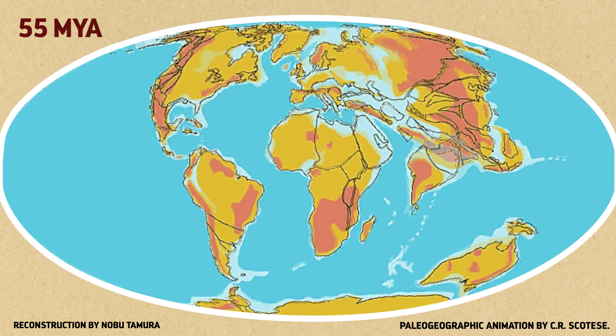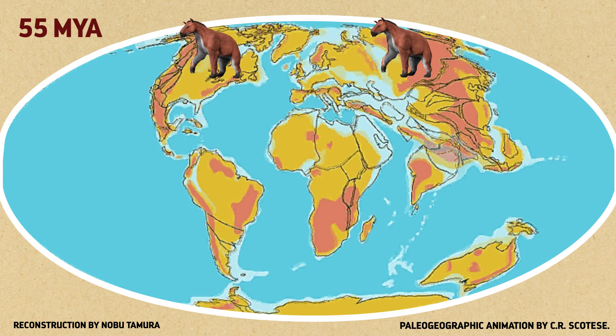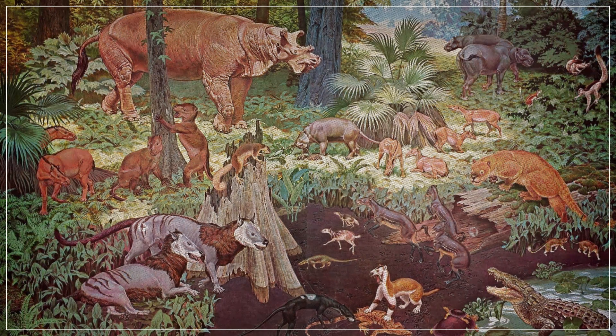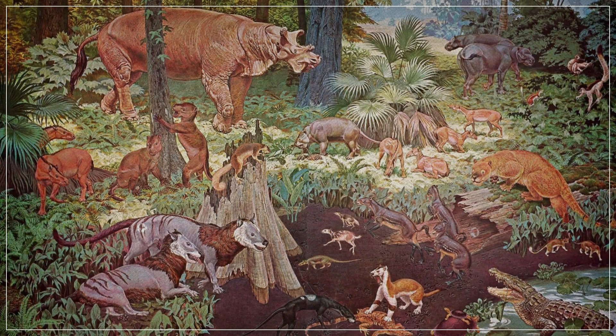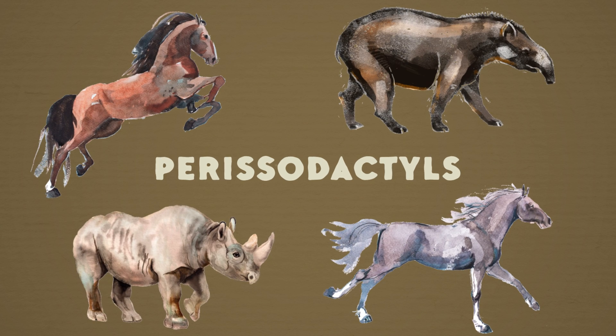Before they diverged into different types, Chalicotheres first showed up in Asia around 55 million years ago during the Eocene epoch of the Paleogene period. They soon made it to North America and Europe, and eventually to Africa. During the Eocene, rainforests were widespread, and they became home to a new group of herbivores, hooved animals called perissodactyls, which today include horses, rhinos, and tapirs.